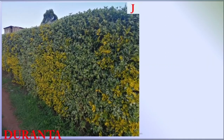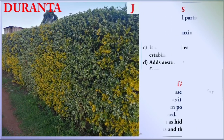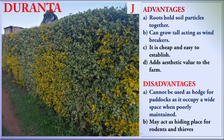Fence J is Duranta. Its advantages: the roots hold soil particles together, preventing soil erosion; it can grow tall, acting as windbreak; it is cheap and easy to establish; and it adds aesthetic value to the farm. Some disadvantages: it cannot be used as a hedge for paddocks as it occupies a wide space when poorly maintained; and it may act as a hiding place for rodents and thieves.